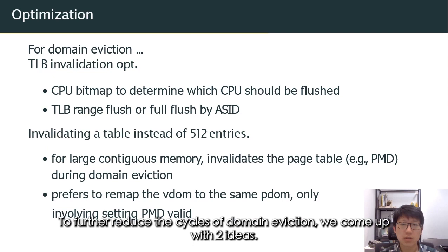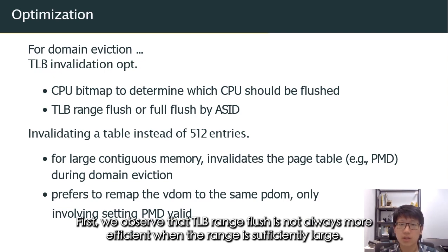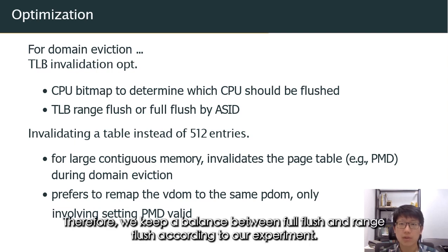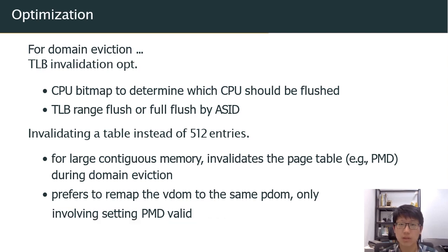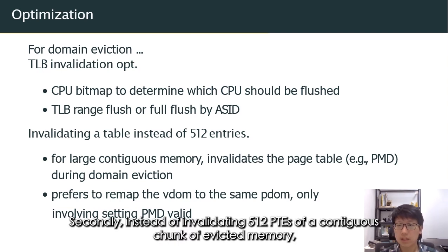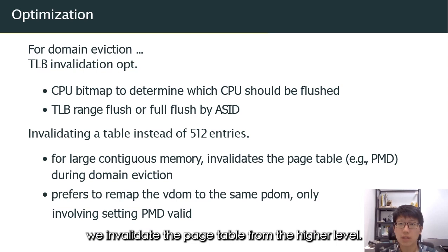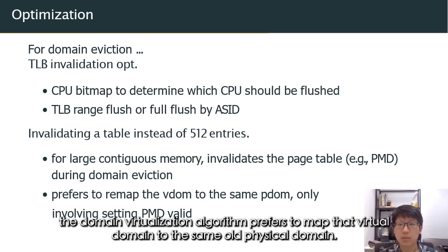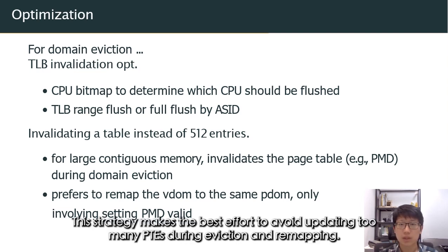To further reduce the cycles of domain eviction, we come up with two ideas. First, we observe that TLB range flush is not always more efficient when the range is sufficiently large, so we keep a balance between full flush and range flush according to our experiments. Secondly, instead of invalidating 512 page table entries of a large evicted memory chunk, we invalidate the page table from a higher level. Later, when the evicted domain needs remapping, the algorithm prefers to map it to the same old physical domain — making the best effort to avoid updating too many page table entries during eviction and remapping.